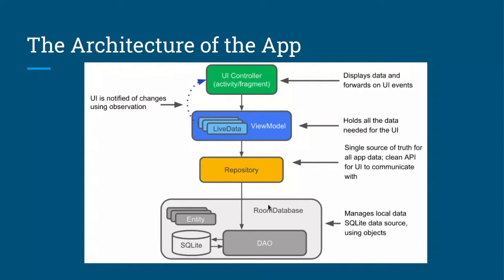If we insert data, LiveData is going to observe those changes and tell the UI that the data has changed, so the UI needs to update. That's the role of LiveData. We also have a Repository, which is just a single source of truth for all the app data. The ViewModel only communicates with the Repository and doesn't need to know where the data is coming from — that's the Repository's responsibility.